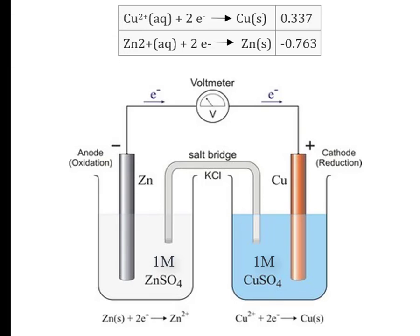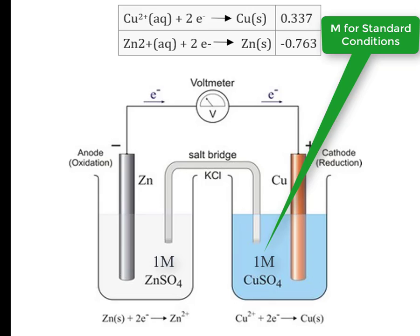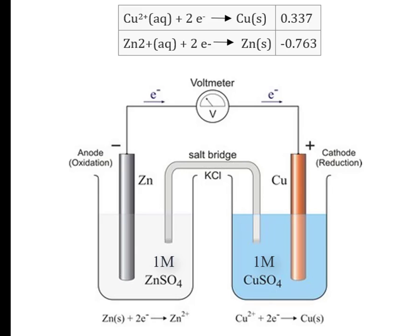And in the right beaker, we include a copper solid anode with copper sulfate in solution. And we connect the two half reactions, or the two beakers, with a salt bridge. And we include a wire between the two electrodes with a voltmeter.